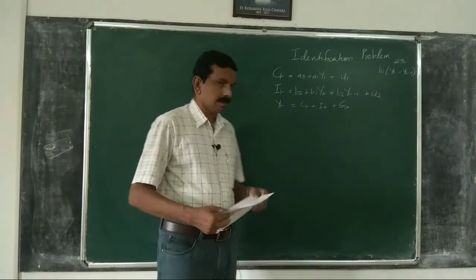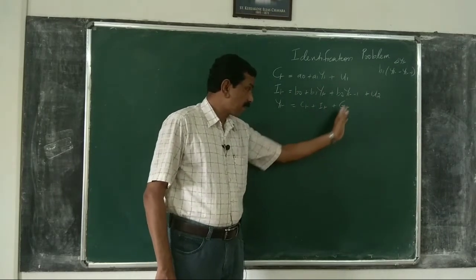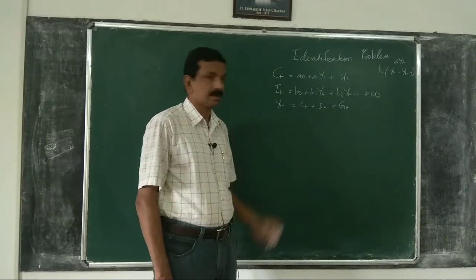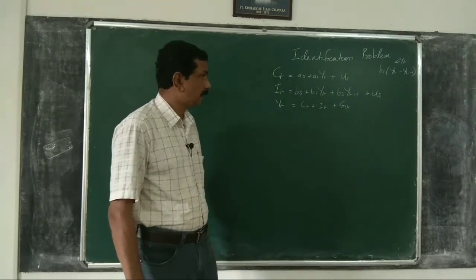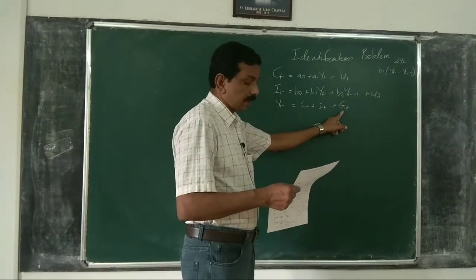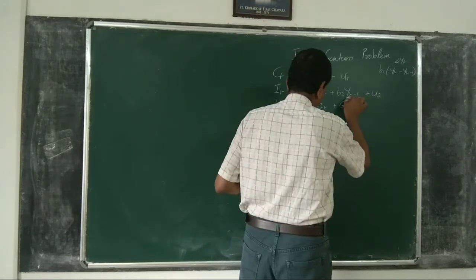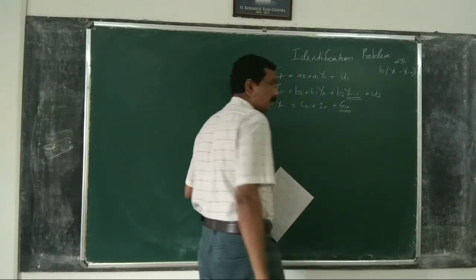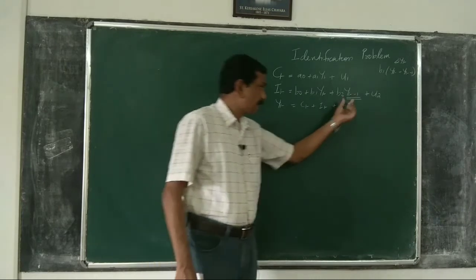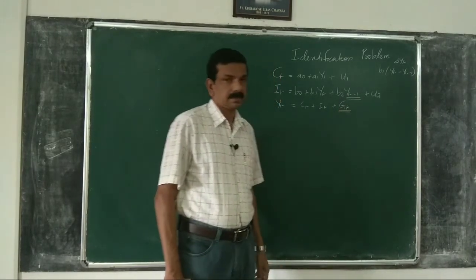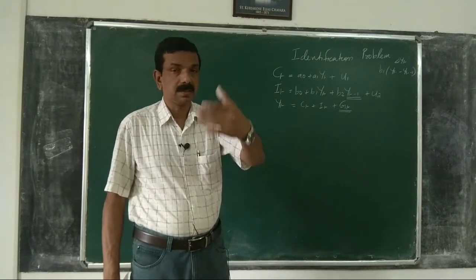As you can see, this is a structural model explaining the structure of interrelationship between variables, with three endogenous variables: Ct, It, and Yt. And two predetermined variables: Yt−1 and Gt. Note that Yt−1 is not exogenous — it is predetermined.